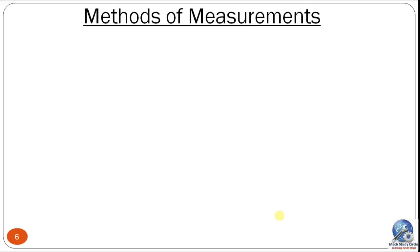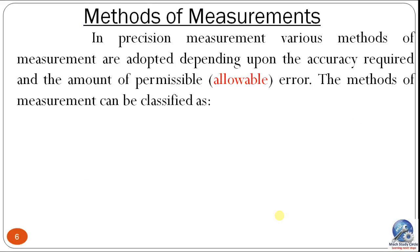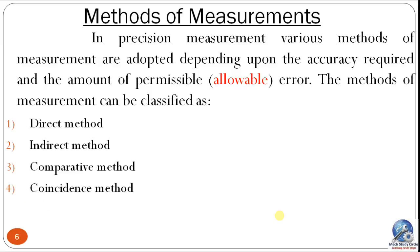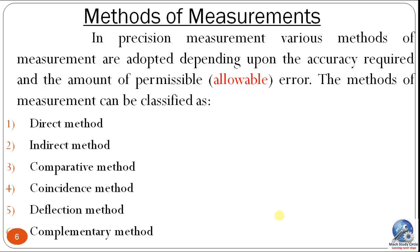Now we move on to the methods of measurement. In precision measurement, various methods are adopted depending upon the accuracy required and the permissible error. The methods of measurement can be classified as: direct method, indirect method, comparative method, coincidence method, deflection method, and complementary method of measurement. We will briefly study all six methods one by one.